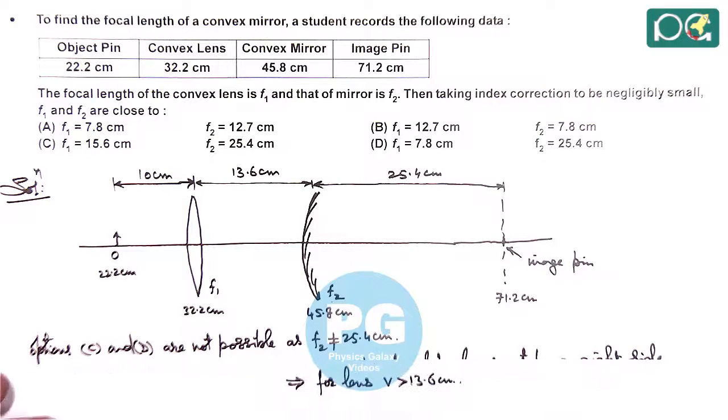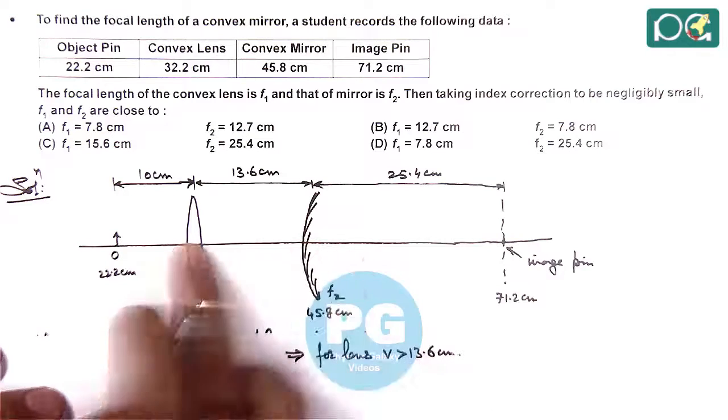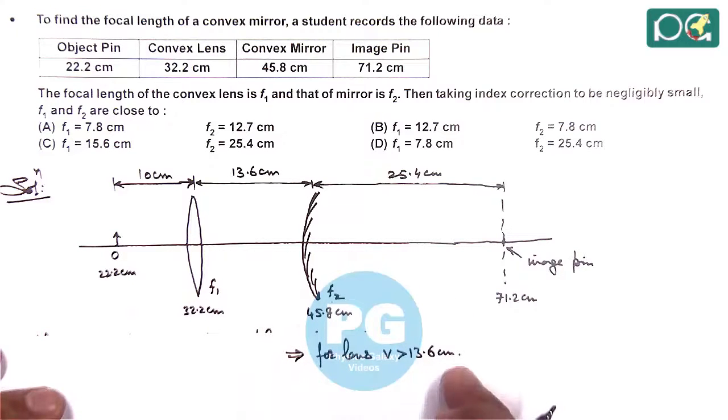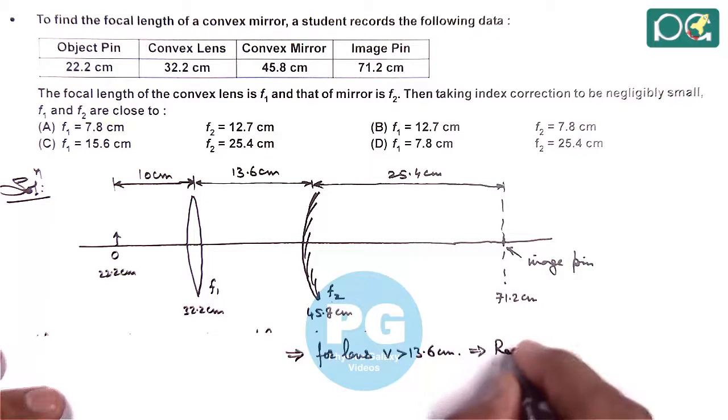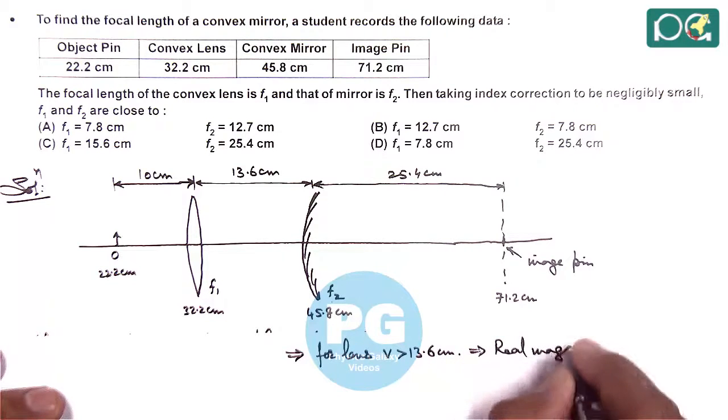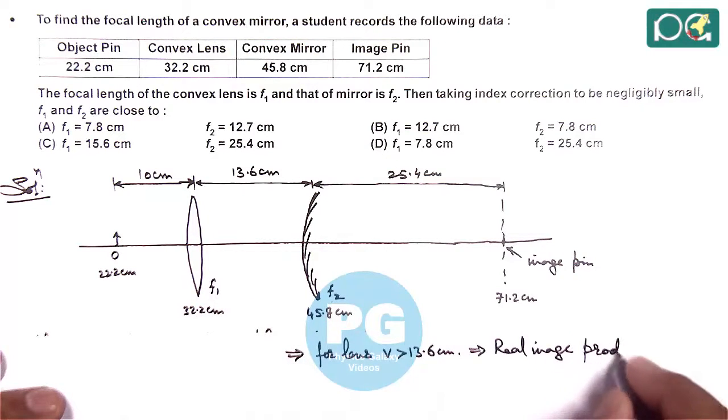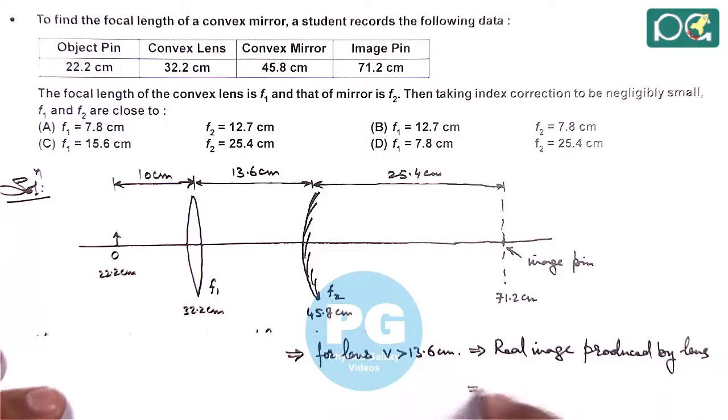v must be greater than 13.6 centimeter. If image is produced by the lens on the right hand side, so for lens v must be greater than 13.6, which implies real image. And if this is a real image produced by lens, this implies f1 must be less than 10 centimeter.